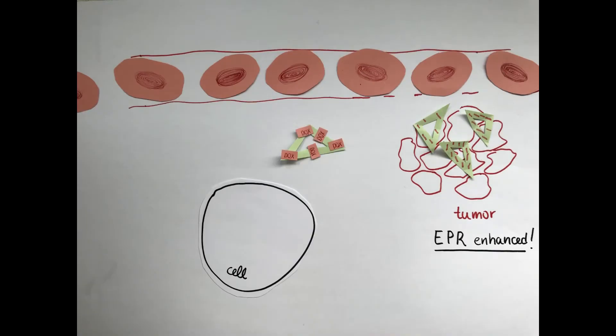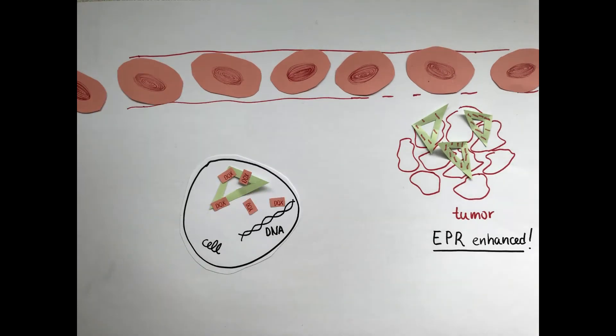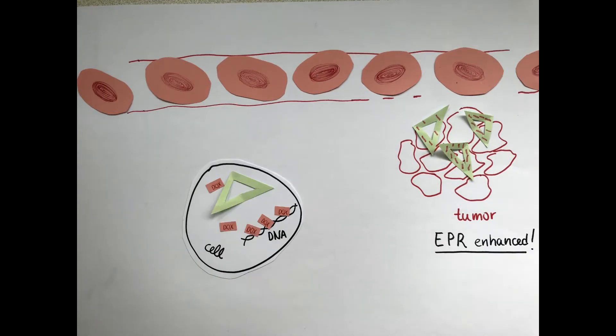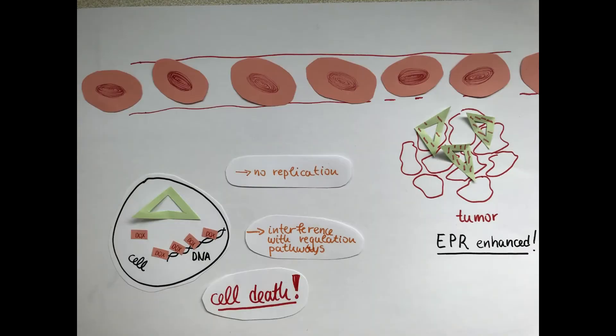The DNA origami enters the cell through endocytosis and there it starts releasing doxorubicin little by little. The drug is now free to act. It intercalates in the DNA, interferes with replication machinery and regulation pathways, causing the cell to die.